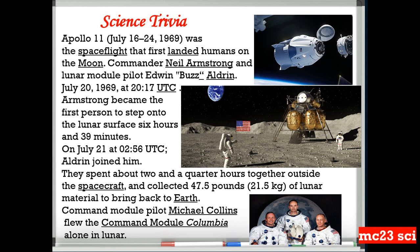And on July 21, at 2:56 in the morning, Aldrin joined him. They spent about two and a quarter hours together outside the spacecraft and collected 21.5 kilograms of lunar materials to bring back to Earth. And the command module pilot Michael Collins flew the command module Columbia alone in lunar orbit.